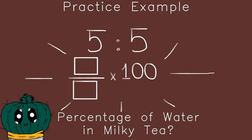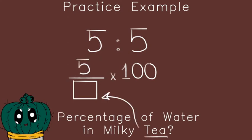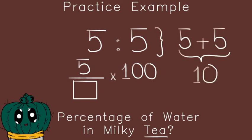Again, you're going to use the percentage formula. Because you're trying to find out the water out of the milky tea, you put the 5 in the numerator. The denominator is 5 added to 5, which equals 10.